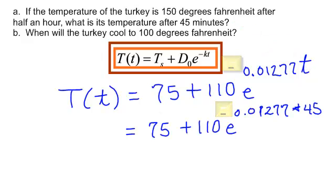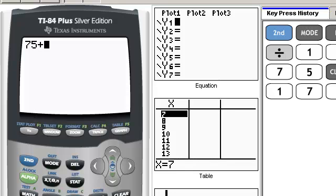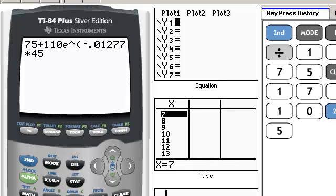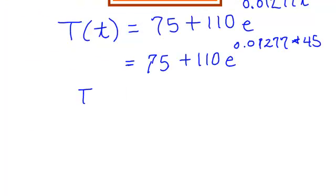Now let's go back to my calculator. And I'm going to plug in the info that we got for our equation. So 75 plus 110 e, now to get to the e button, that's under your LN, meaning I have to hit the second button and then the LN. E to the negative point 01277 times 45, close your parentheses, and your answer is that after 45 minutes that turkey is going to be about 137 degrees. So after 45 minutes, when our time was 45, T at 45, when I plug that into my calculator, I got approximately 137 degrees.